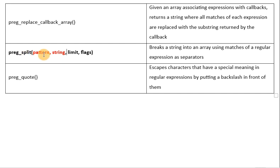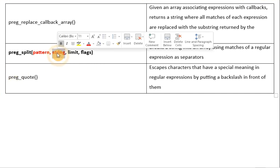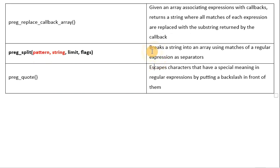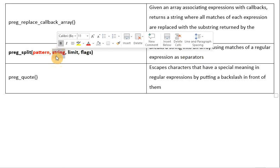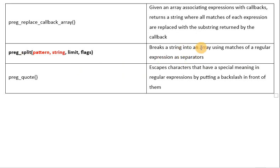PregSplit takes four arguments — the first two are mandatory and the other two are optional. What this function does is it takes input in the form of a string, looks for a particular pattern, and on the basis of that pattern it breaks the string into an array using the matches of the regular expression as separators. It always takes a string as input and returns output in array format.